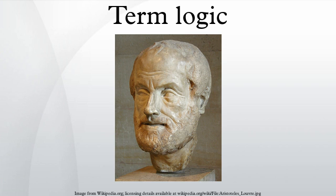Traditionally, the four kinds of propositions are: A-type, universal and affirmative; I-type, particular and affirmative; E-type, universal and negative; and O-type, particular and negative. This was called the fourfold scheme of propositions. Aristotle's original square of opposition, however, does not lack existential import.